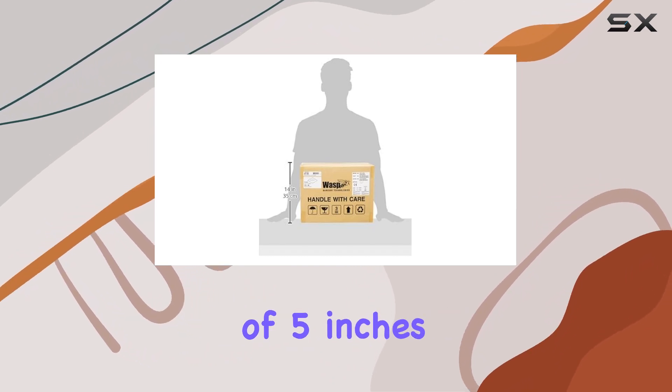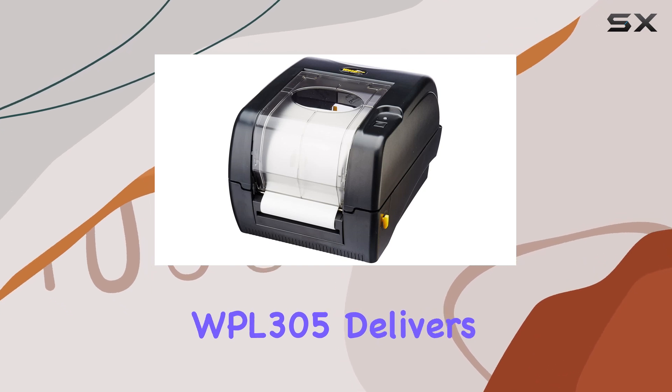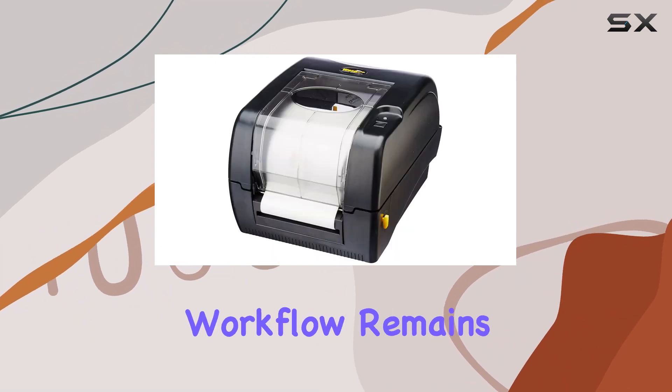With a maximum print speed of 5 inches per second at a resolution of 203 dpi, the WPL305 delivers clear and precise labels quickly, ensuring your workflow remains uninterrupted.